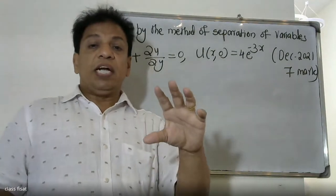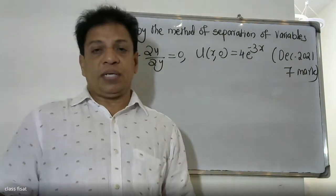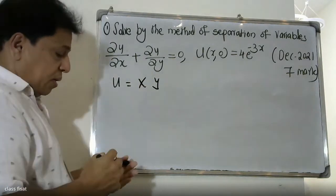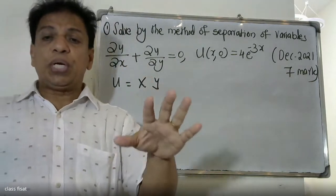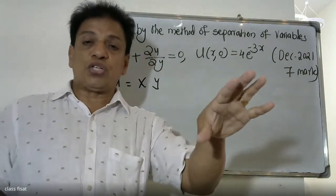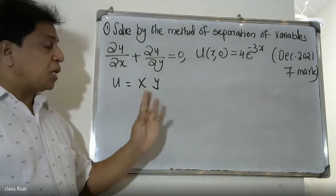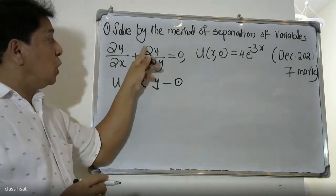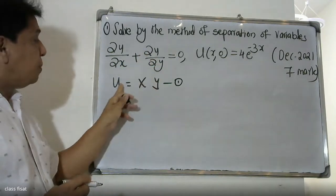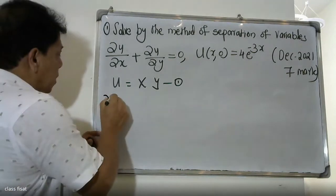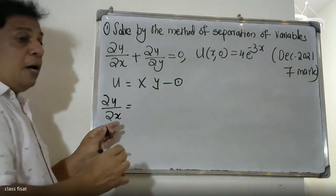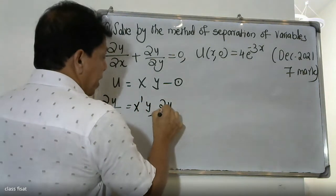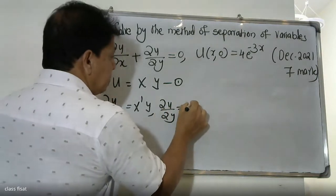Here u is the dependent variable and x, y are independent variables. We are going to assume the solution u = X·Y, where X is a function of x only and Y is a function of y only. This is equation 1. Partially differentiating with respect to x gives X'Y, and partially differentiating with respect to y gives XY'.